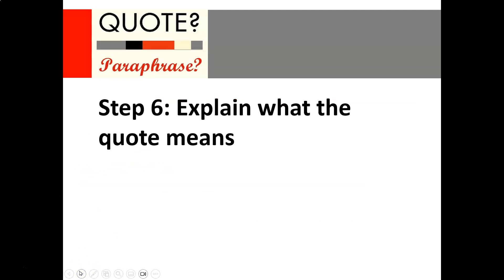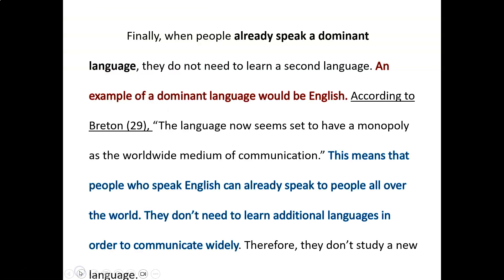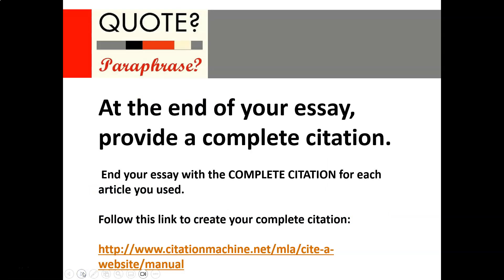Step six is extremely important: explain what the quote means. We never want to end a paragraph with a quote — we always want something after it to explain the meaning. In the example, the writer says 'this means that' and then explains how the quote connects to their idea. It's fine to use exactly that phrase. 'This' refers to the whole previous sentence, so after a quote it's always a good idea to say 'this means that' and then provide your explanation.